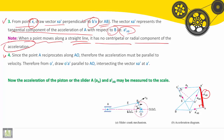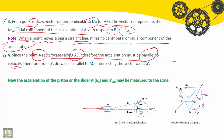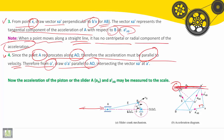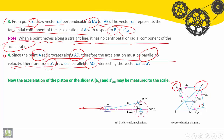Step number four: since the point A reciprocates along AO, with reciprocating motion, therefore from O dash, draw the parallel to AO — it will be horizontal — intersecting with X A dash in A dash.